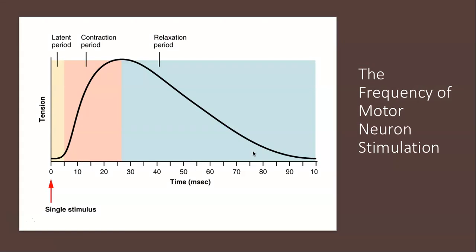The next thing I want to talk about is the frequency of motor neuron stimulation. A single action potential from a motor neuron will produce a single contraction in the muscle fibers of its motor unit.